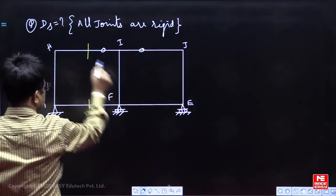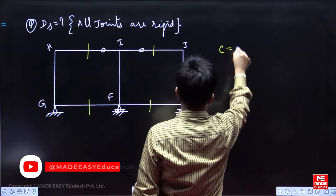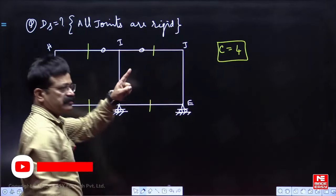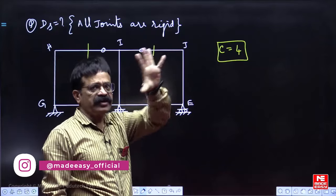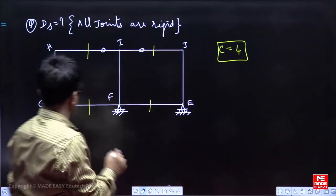To get them, we have to make cuts like this: 1, 2, 3, 4. So number of cuts are 4. Then if you want to use 3×C formula, then all joints must be rigid, frame must be stable cantilever frame.